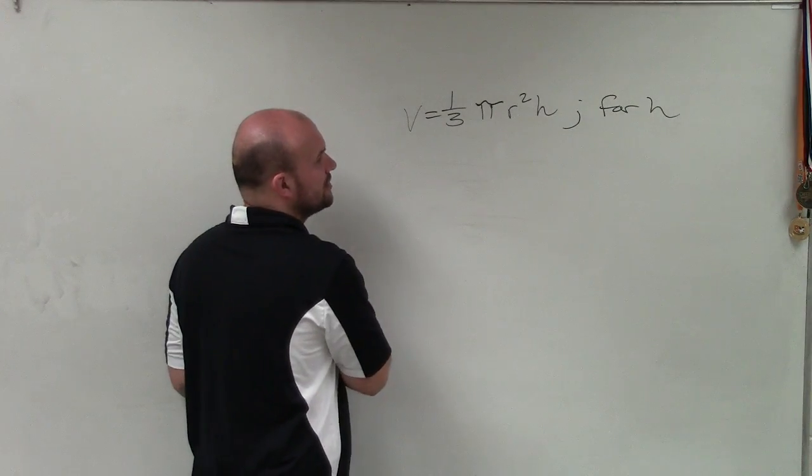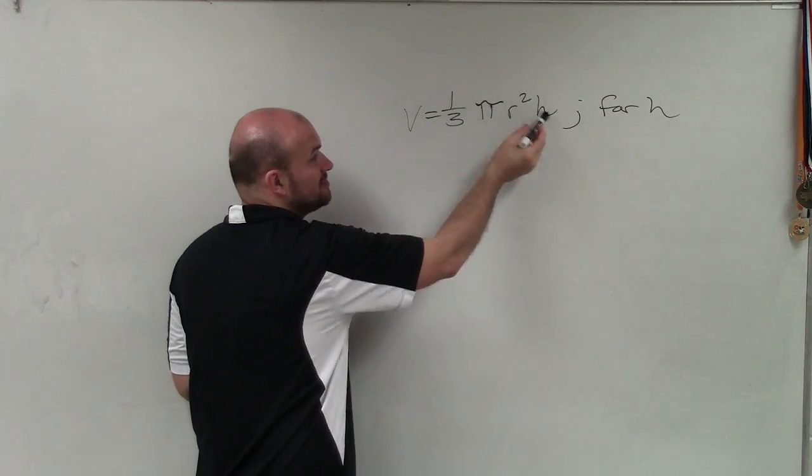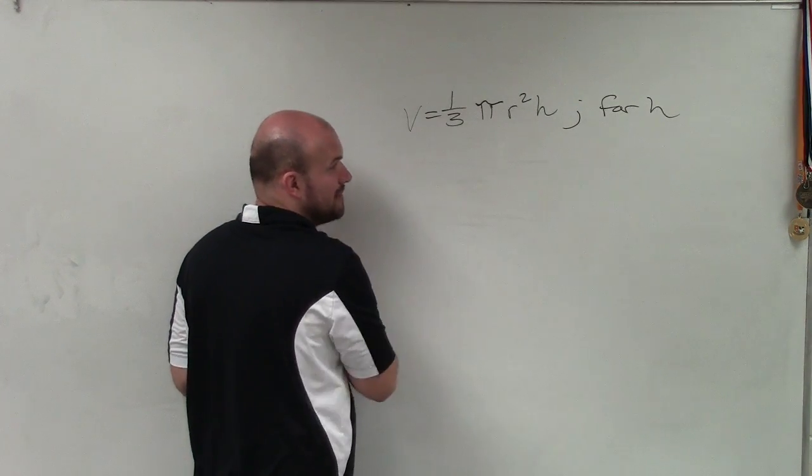So to do that, what I need to do is look at what is happening to my variable. My variable is being multiplied by r squared, multiplied by pi, and being multiplied by 1/3. So I need to undo all those operations.